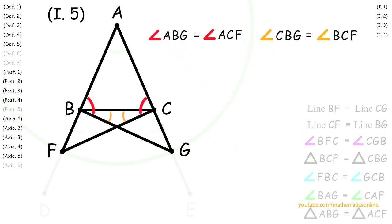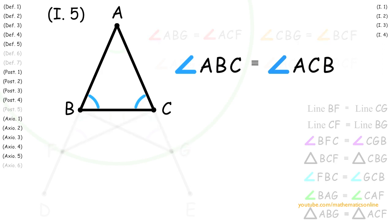And so finally, we have angle ABG is congruent to angle ACF, and angle CBG is congruent to angle BCF. With these two facts, we can apply axiom 3 to show that angle ABG minus angle CBG is congruent to angle ACF minus angle BCF. And what this turns out to be is angle ABC is congruent to angle ACB, which are the base angles of our given isosceles triangle.